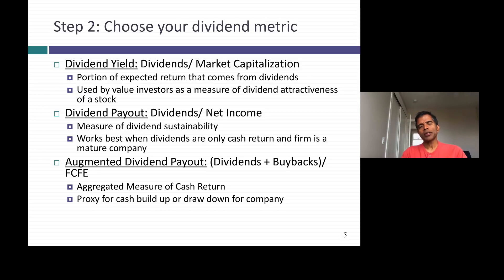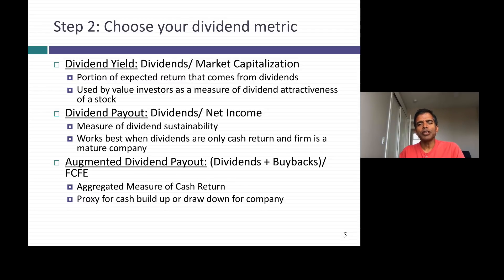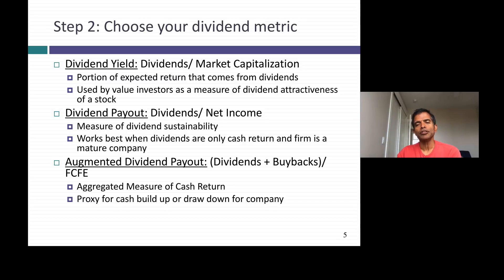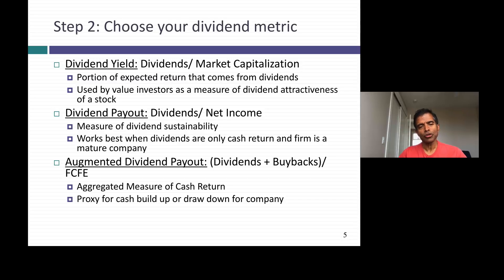To make a judgment on whether a company is paying too much or too little in dividends, you have to pick your metric. There are three choices. First, you can divide dividends by market cap — that's dividend yield — and that number gives you the percentage return investors get from dividends. Value investors often judge how attractive a company is by looking at the dividend yield; it's the portion of return they believe can be counted on. Second, you can go internal and ask: can I afford to pay the dividends? The oldest proxy here is the payout ratio — the percentage of net income you pay out in dividends.